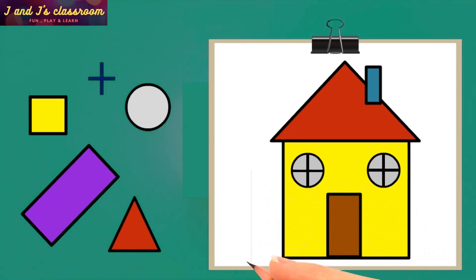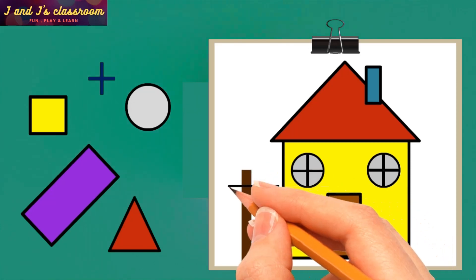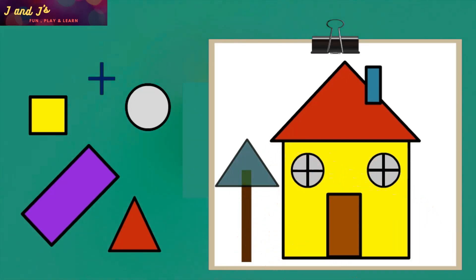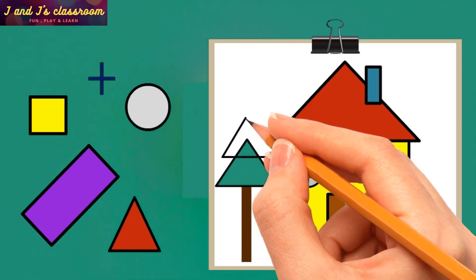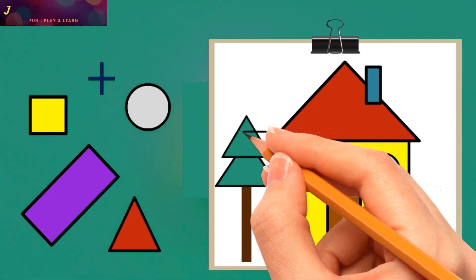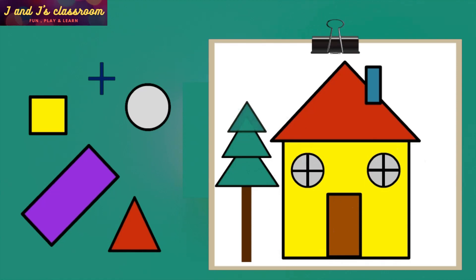Okay! Now draw a rectangle for the bottom portion. And for the top portion, draw three triangles as a stack. Then color your tree. That's all. Hope you understand how to draw the house and tree.